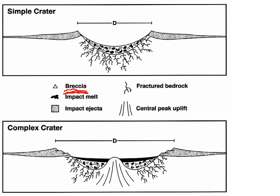So this is what a simple crater tends to look like: a depression, a raised rim, material that's fractured, broken, and melted inside, and material that's tossed outward on the edge.